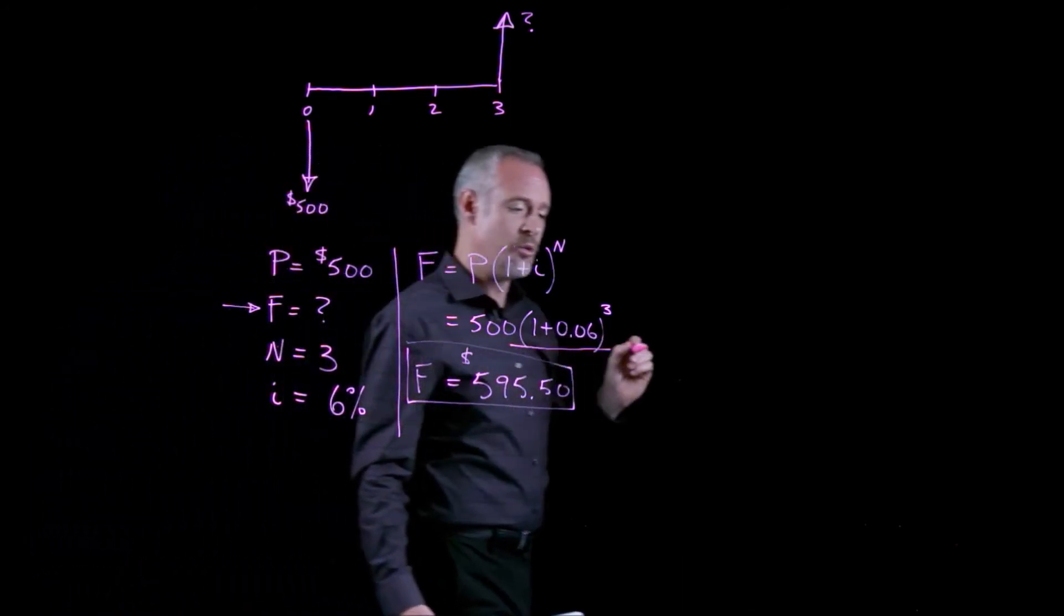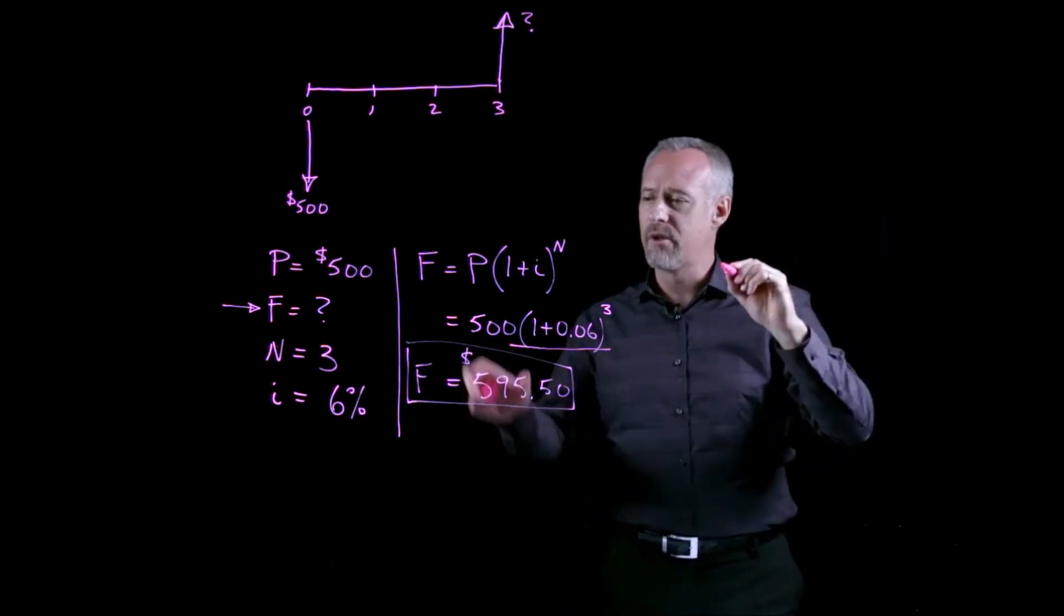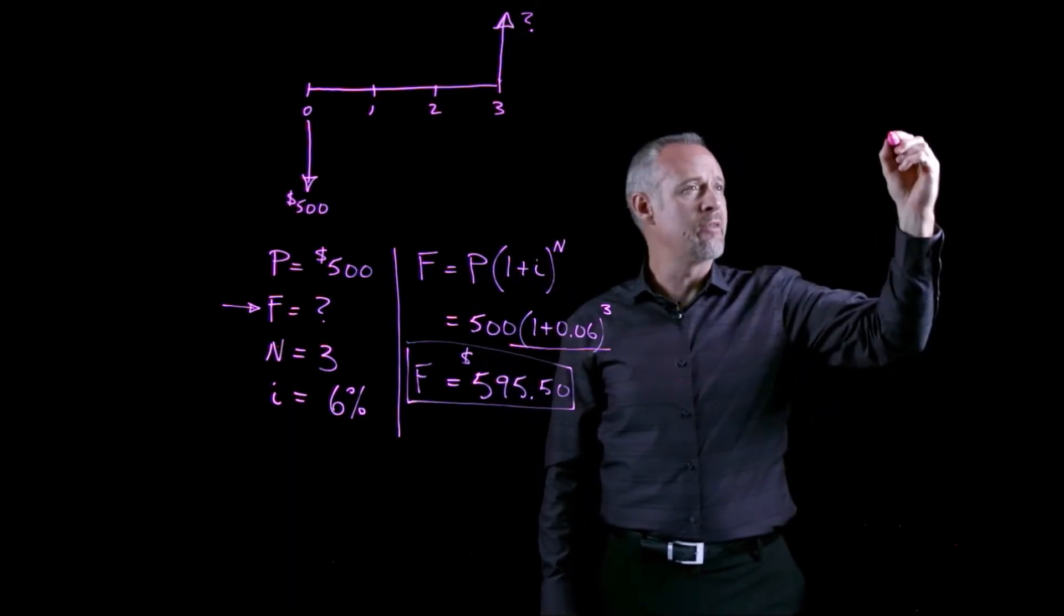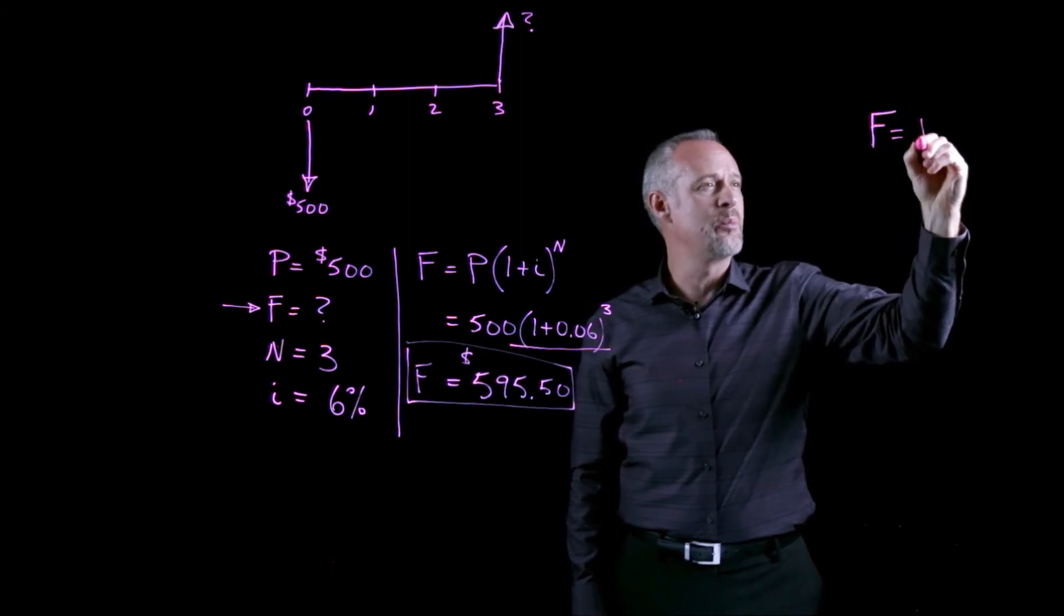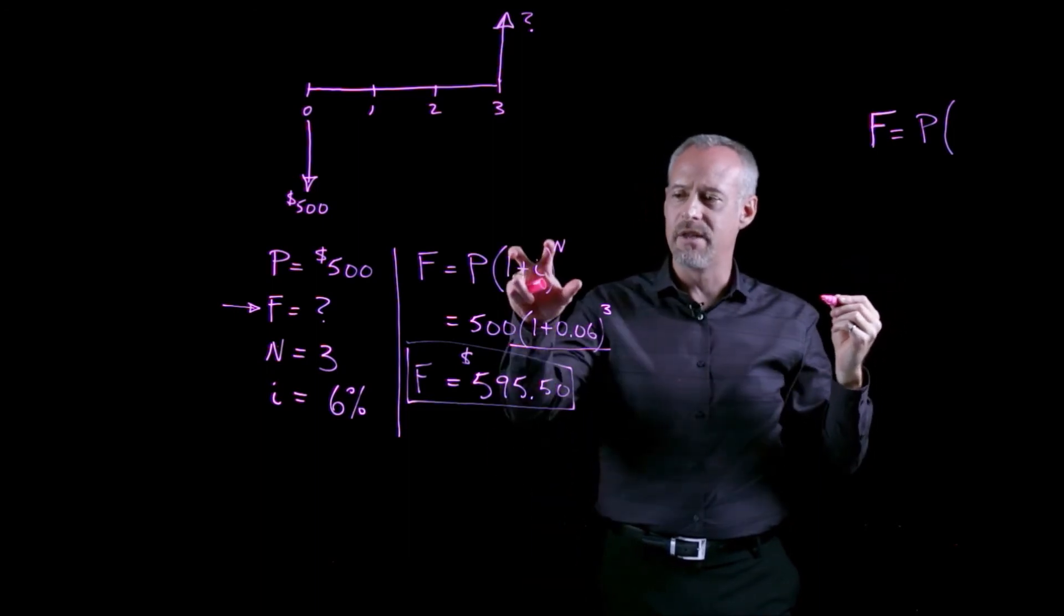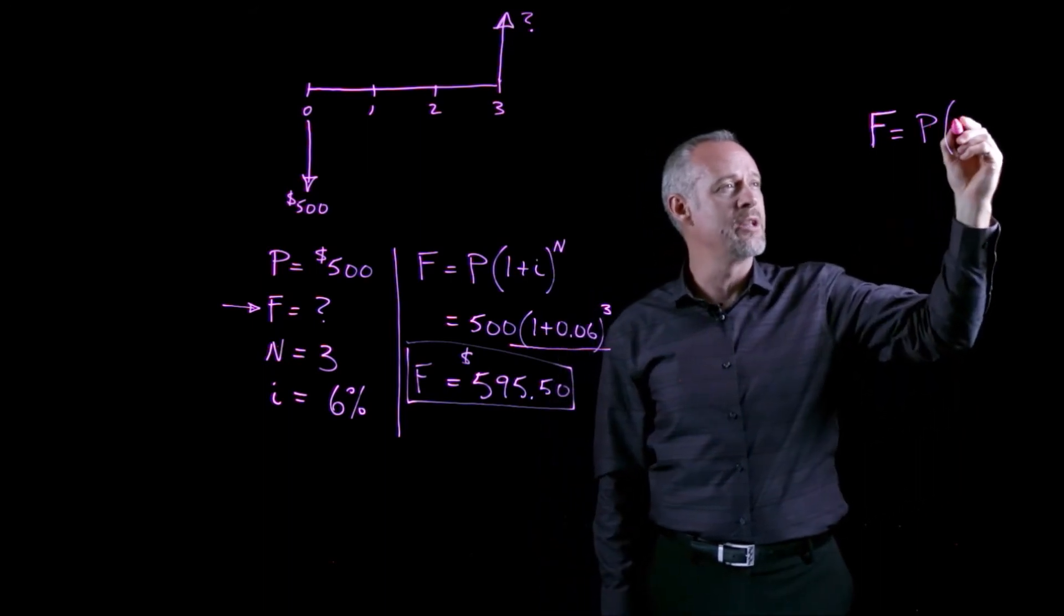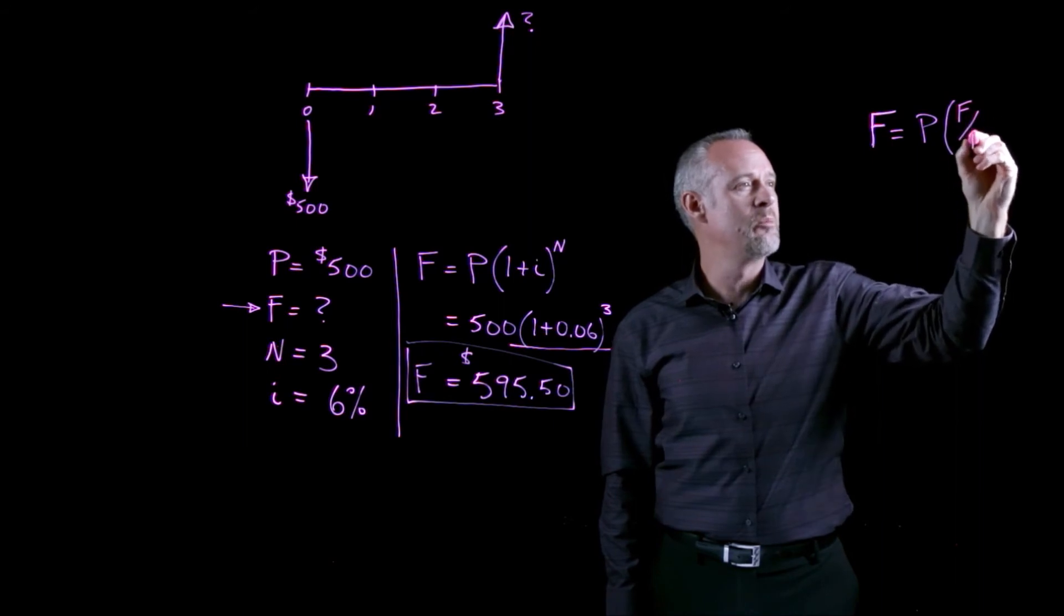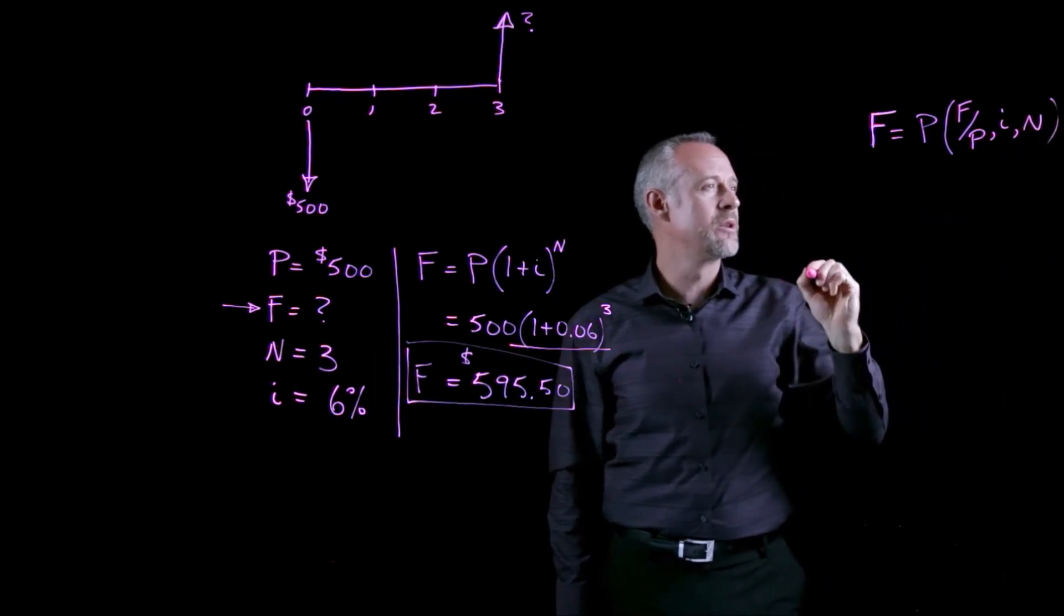Although we can always use a formula, sometimes the usefulness of a compound interest table becomes apparent. So I'd like to introduce a new notation. For this particular problem, rather than write the formula F equals P times 1 plus i to the N, if I know I'm looking for F, I can write this in a different way. F is equal to P times the compound interest factor that will represent the value of the formula. The notation that I use for this particular one is called F given P for a certain interest rate and a certain number of periods.